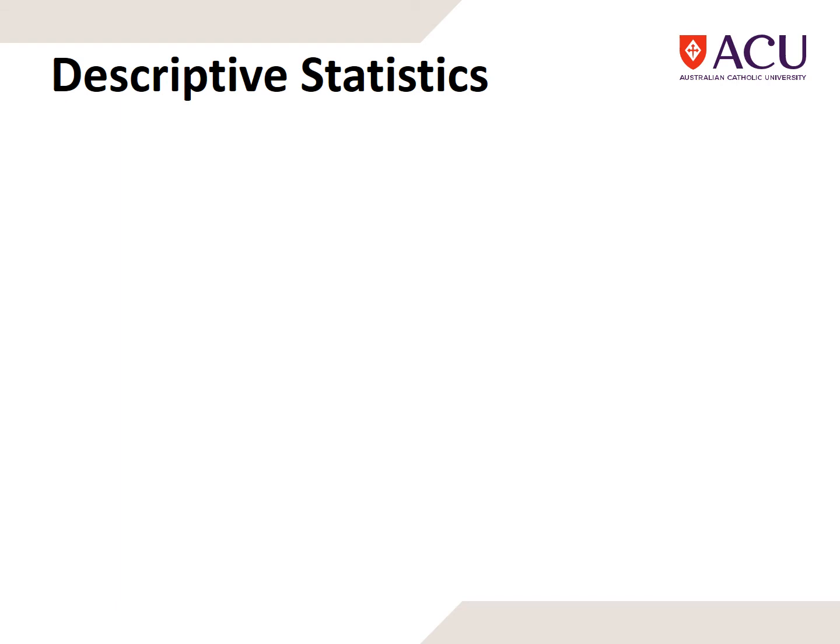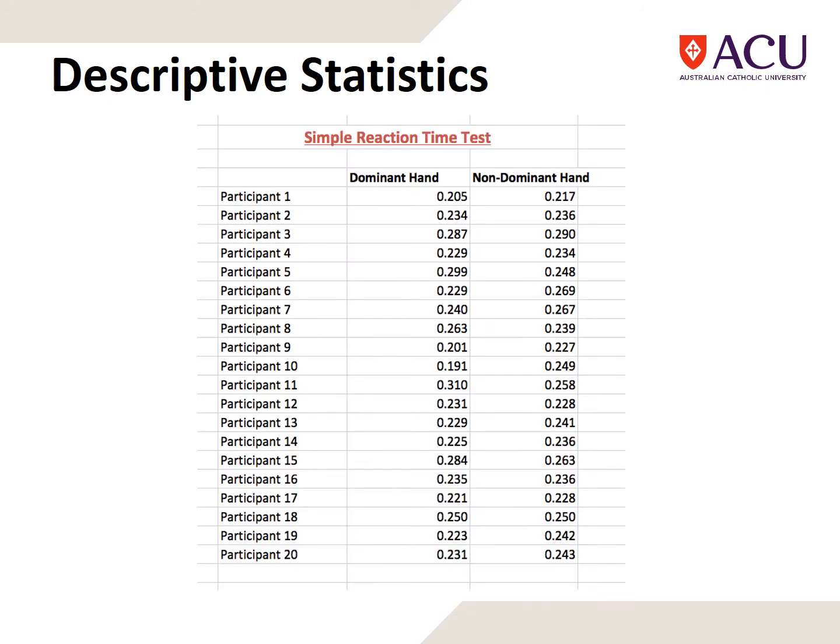In the first statistics module, we looked at broad types of statistics—descriptive and inferential—and discussed scales of measurement. This heads us back to having a data set where we want something out of it.